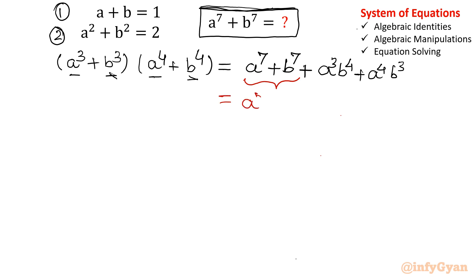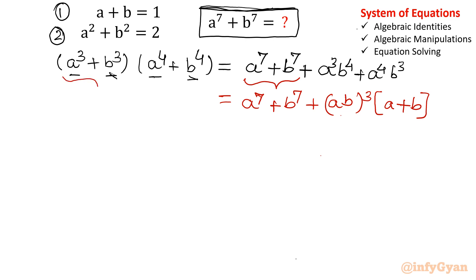Let me write this term again. a⁷ plus b⁷, and then the cross terms factor as a³b³ times (a+b). So our equation 3 is: a⁷ + b⁷ = (a³+b³)(a⁴+b⁴) − (ab)³(a+b). Now we can see what is required: a³+b³, a⁴+b⁴, and the product ab. The value of a+b is known from equation 1, that is 1.